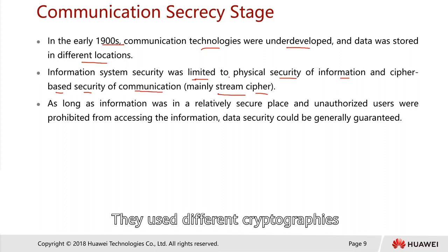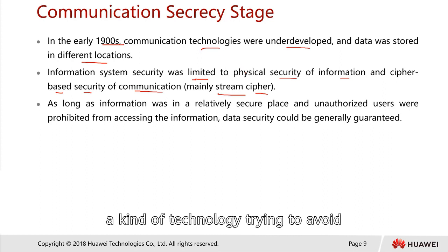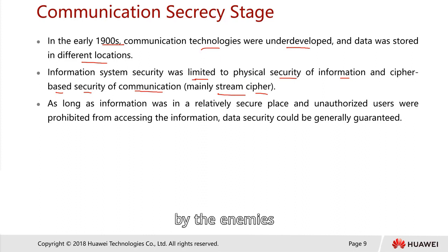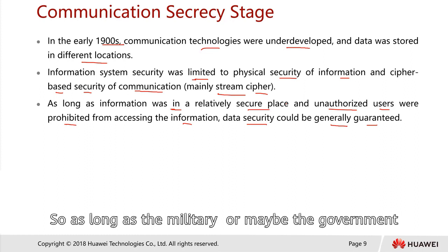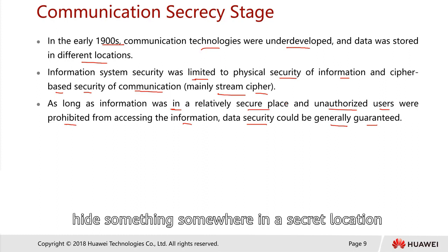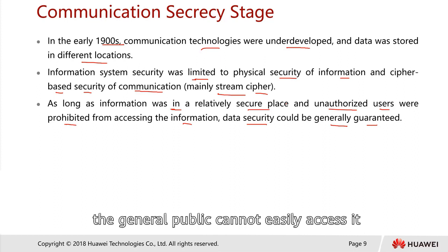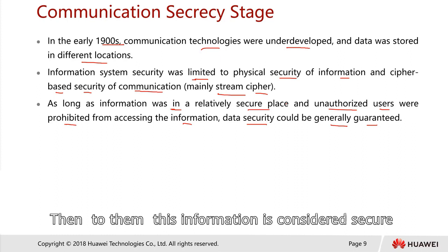During the Second World War, different cryptography technologies were used to prevent transmitted signals from being intercepted by enemies. As long as information was in a relatively secure place and unauthorized users were prohibited from accessing it, data security could generally be guaranteed. The military and government would hide information in secret locations, inaccessible to the general public, and that was considered information security.